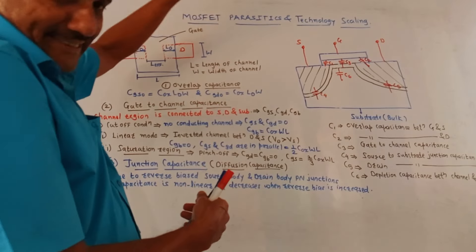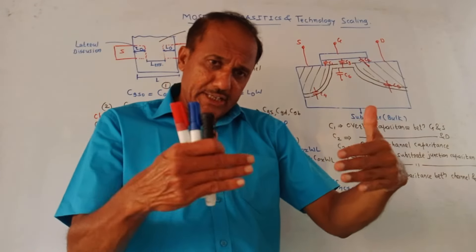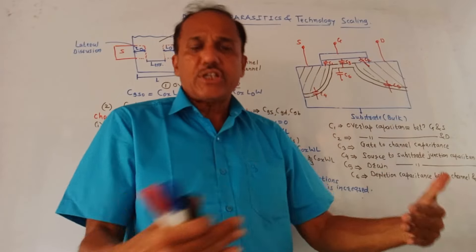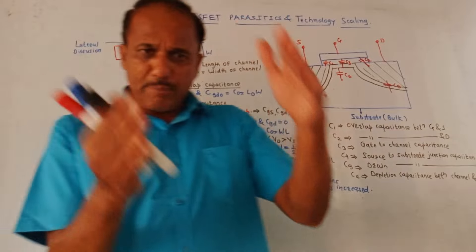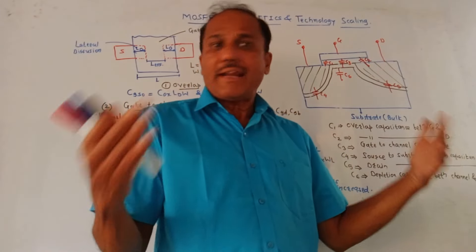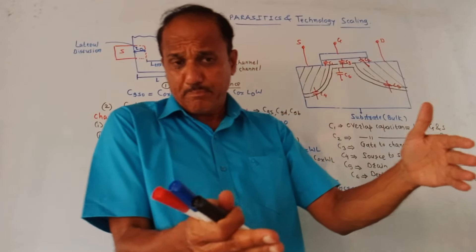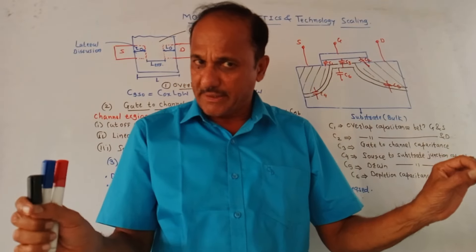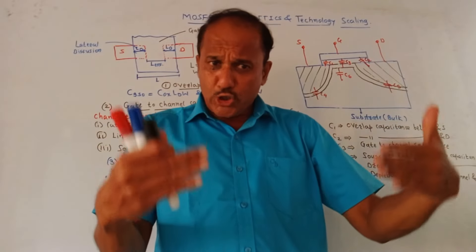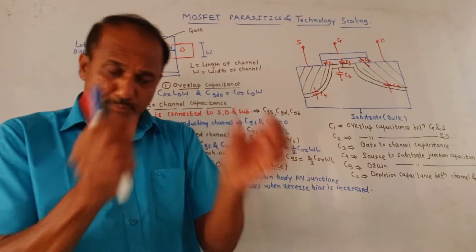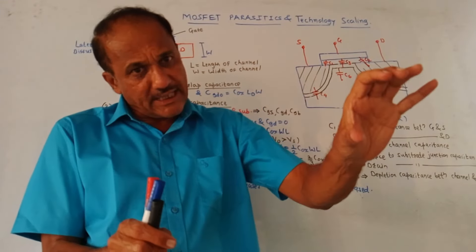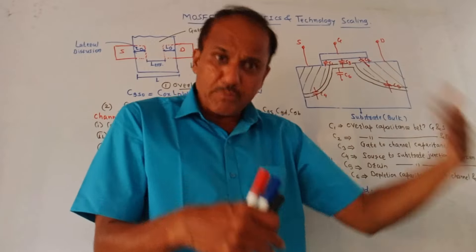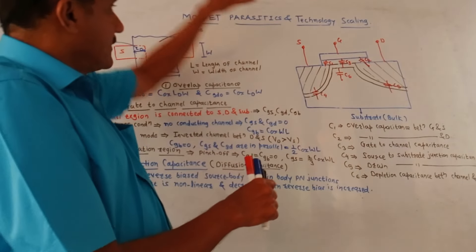Let us start with MOSFET parasitics. This topic indicates what are the different parasitic capacitors that are created while manufacturing the MOSFET. In simplified language, a capacitor — if I'm talking about a parallel plate capacitor — has two plates with an electric medium in between, and that structure acts as a capacitor. In case of a MOSFET, we are not artificially creating capacitors, but due to the structure of the MOSFET, different capacitors are created which affect the performance of the MOSFET. This comes under MOSFET parasitics.